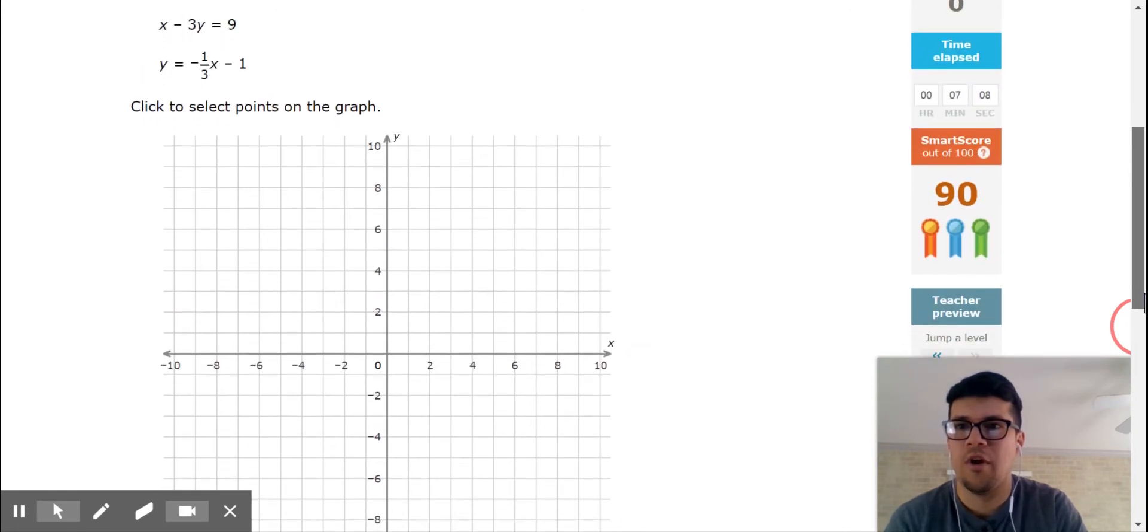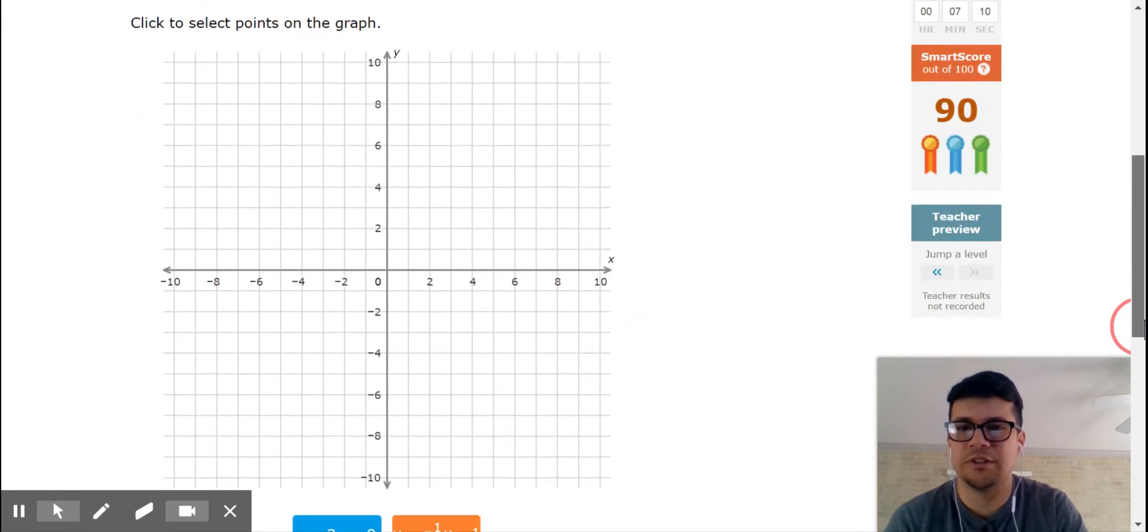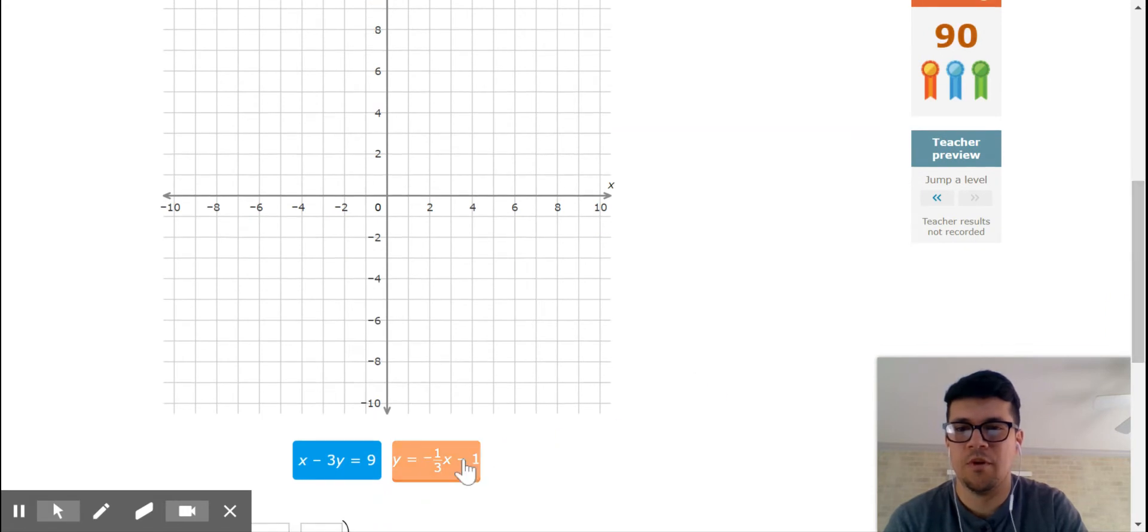So I'm going to attempt to graph y equals negative 1/3x minus 1. So I'm going to go down 1 over 3. And there it is, y equals negative 1/3x minus 1.